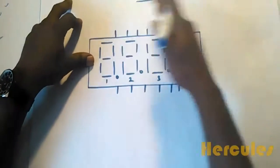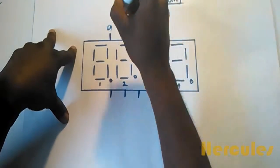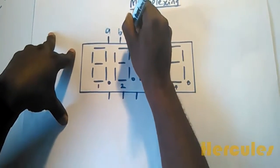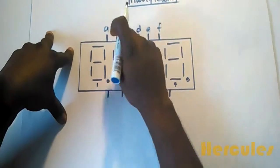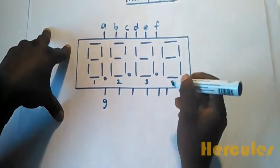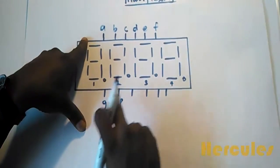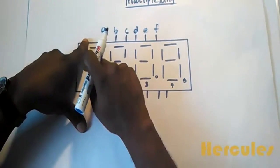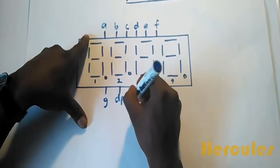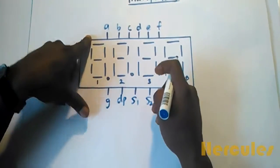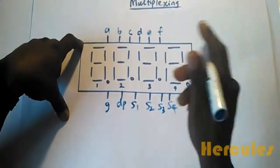For these different segments, we see fewer pins. We have segment a, b, c, d, e, f, g, and for the decimal points we have dp. For the different segments, they are connected to VCC, so we have s1, s2, s3, and s4. This is better—we have more pins saved. Instead of using 36 pins, we use only 12 pins.